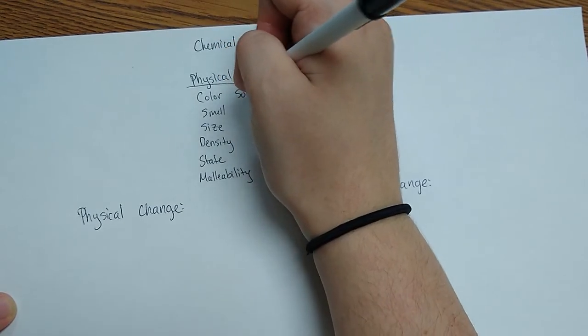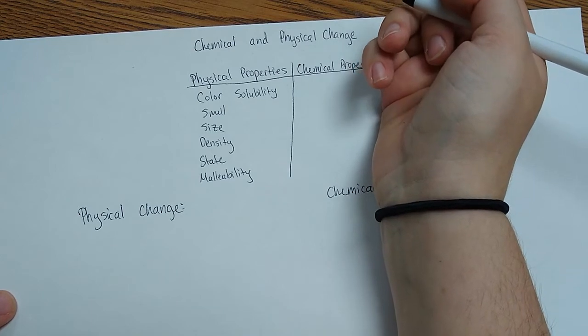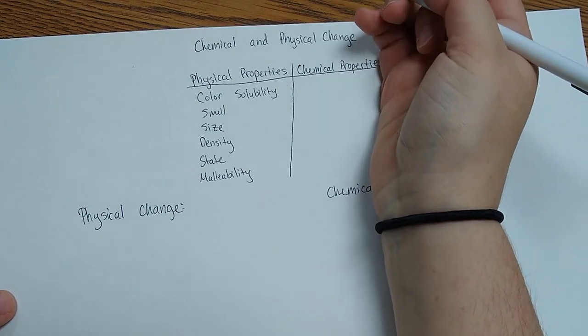Solubility. If you can dissolve something, something like salt dissolves very easily in water, while flour does not.